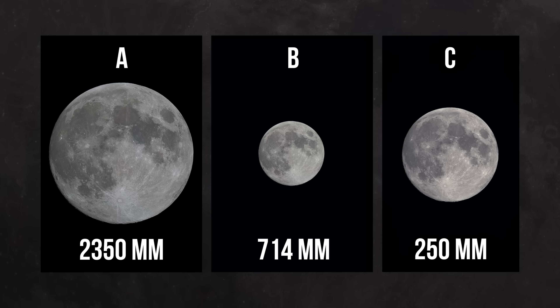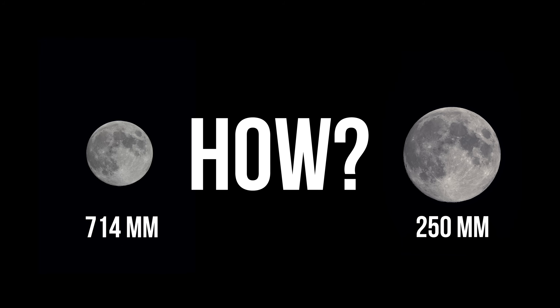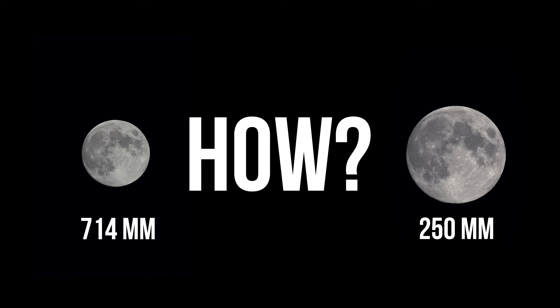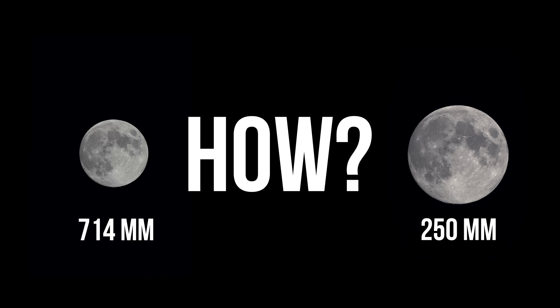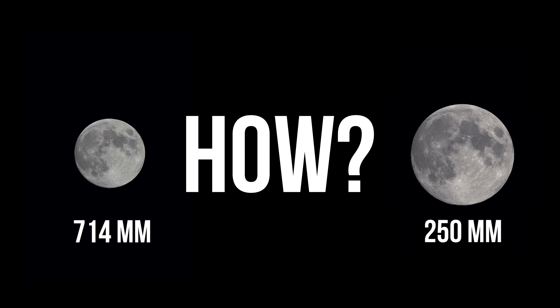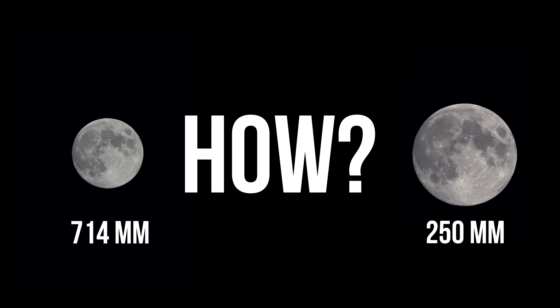And now, let me show you the image from the smallest setup with just 250mm focal length. How can this tiny telescope produce a moon image that is significantly larger than the medium-sized telescope? Because I only told you half of the story.